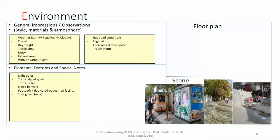Here you can see that this footpath is encroached by a person who is selling books or similar items. This will force pedestrians to move off the footpath, and if a vehicle is coming from behind at that time, they will be endangered. Many booths, public utility facilities, or service infrastructure installations are also encroaching upon the pedestrians' walking area.